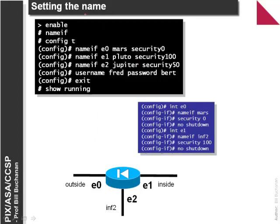We can set the name in PIX 6 with 'nameif' and then define the port, the name, and the security level — 100 for inside, 50 for DMZ, and 0 for outside. In PIX 7 ASA we can also define the name with 'nameif'. The security level of E0 is 0 and we do a 'no shutdown'. E1 is configured the same way.